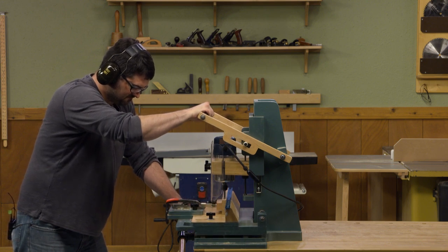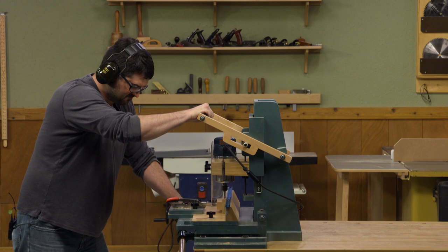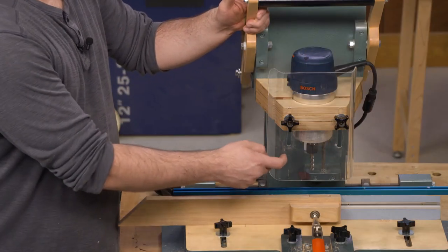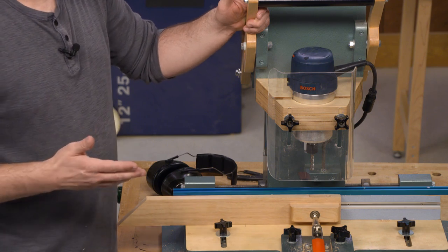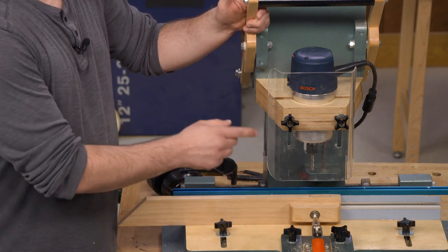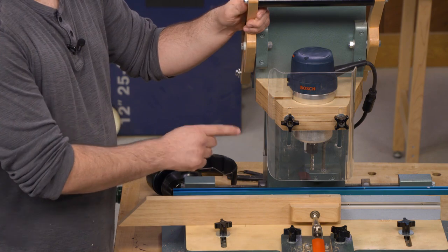It really makes mortises fast and easy. But the one thing it didn't include in the original design was this plastic guard. And what I found before we had this guard is even when that bit's not running, it's sharp.